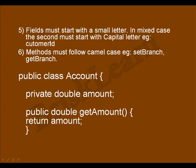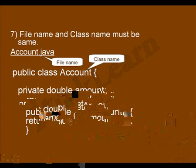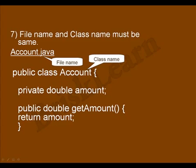But as part of fields, if it is a final field, all the alphabets must be in capital letters. In the account class, 'amount' is a variable which starts with a small letter, and 'getAmount' is a method that starts with a small letter with the second word starting with a capital letter — which is called camel case. And the file name and class name must be the same; for example, if the class is 'Account', the file name must be Account.java.